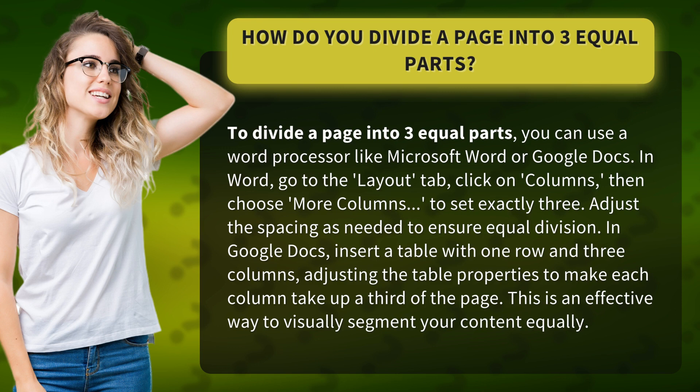In Google Docs, insert a table with one row and three columns, adjusting the table properties to make each column take up a third of the page. This is an effective way to visually segment your content equally.